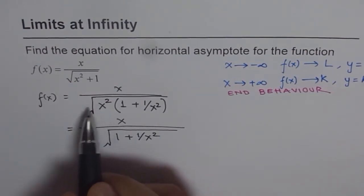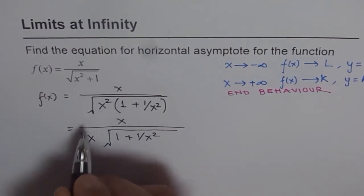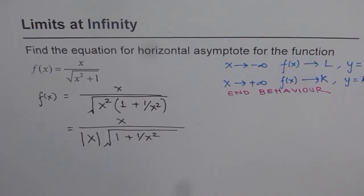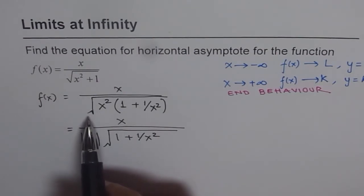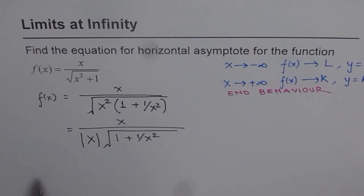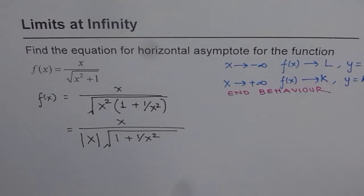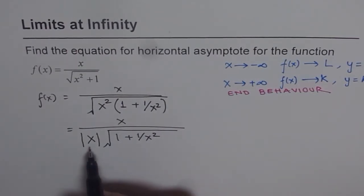When we bring the x squared outside the square root, what is the square root of x squared? It is NOT simply x — it is the absolute value of x. The square root always gives a positive value, so √(x²) = |x|. This is critical to understand in order to solve this question. Now let's find the limits as x approaches both positive and negative infinity.